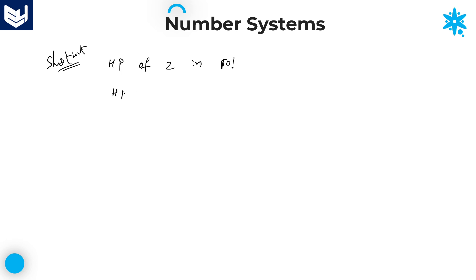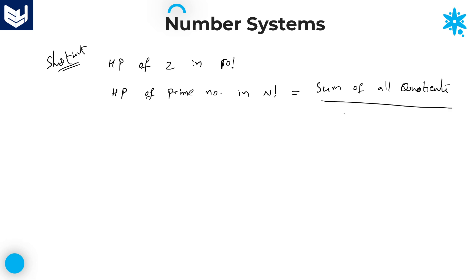Whenever we need to find the highest power of a prime number in n factorial, the required answer is the sum of all the quotients obtained by dividing n successively by the prime number, divided by the power of that prime number. Here, the prime number is 2 and its power value is 1, so the denominator is simply 1 — no problem with the denominator.